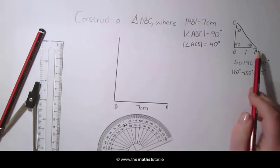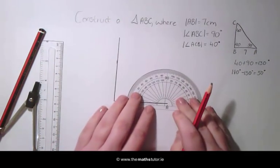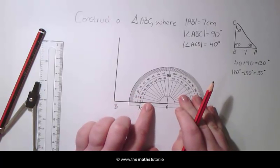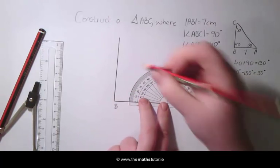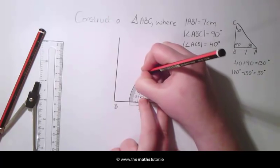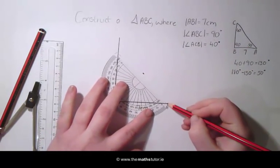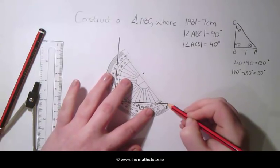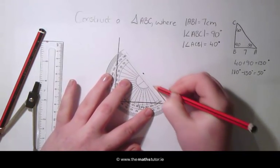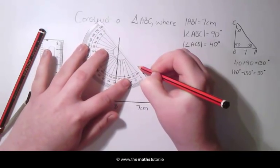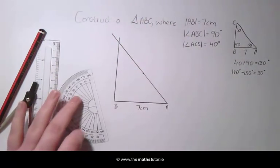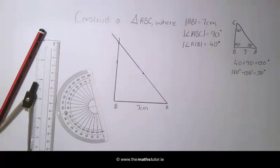On the other side at A we can see we have an angle of 50 degrees. Draw a line through this and extend it until we cross the other line. Here we can see we have our point C.